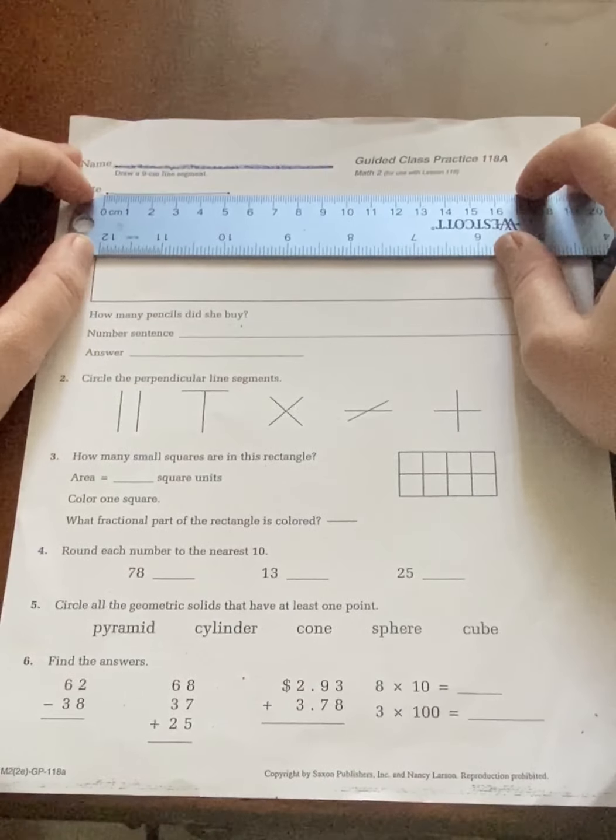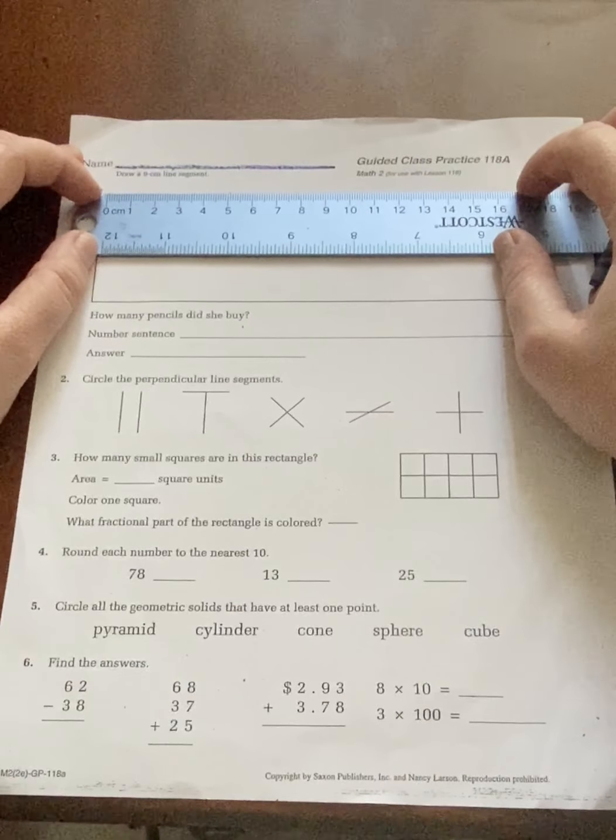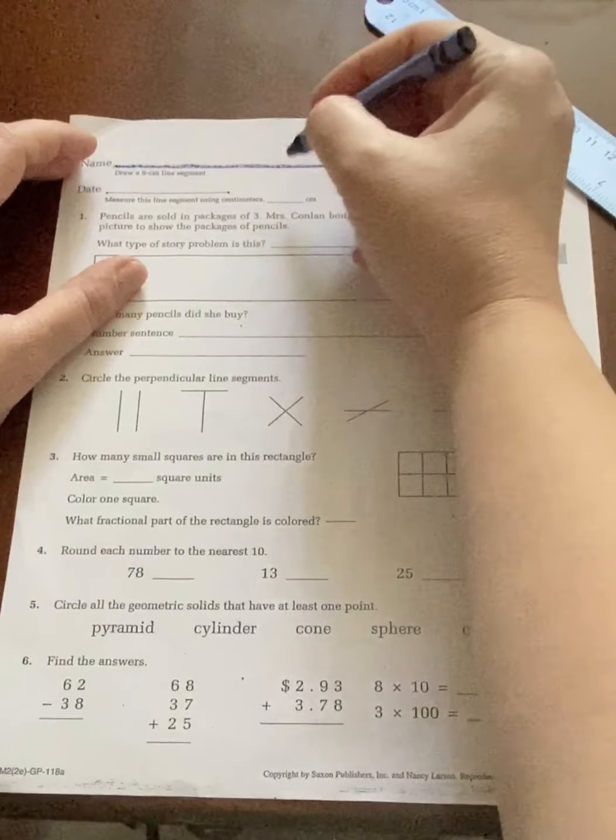Then it says measure my date line in centimeters again. So I'm going to line it up. What did you guys get? 5 centimeters is correct.